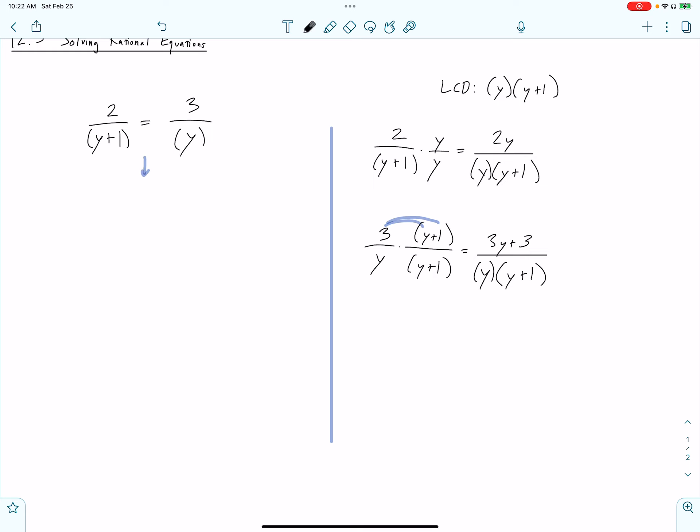So, what about the other one? 3 over y is missing the y plus 1 from the LCD that we decided. The nice thing about this setup is it always guarantees that we get the LCD that we intended.